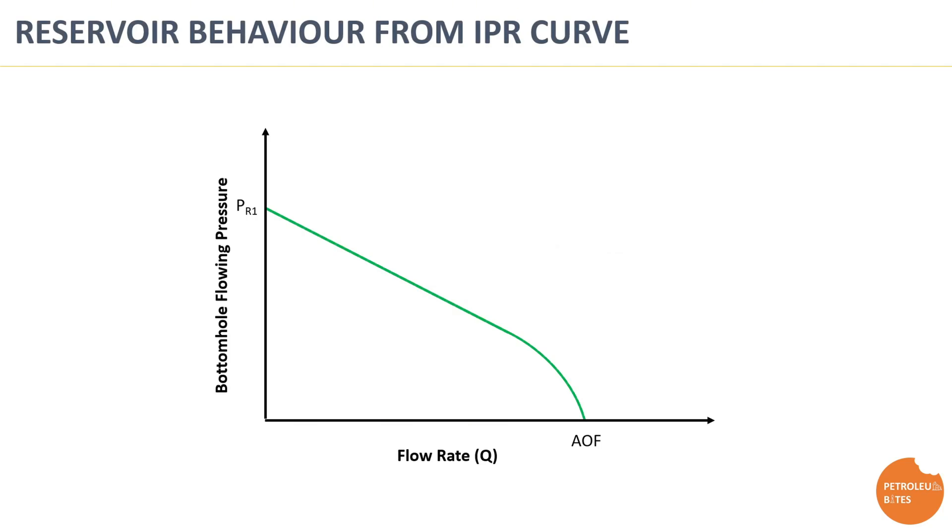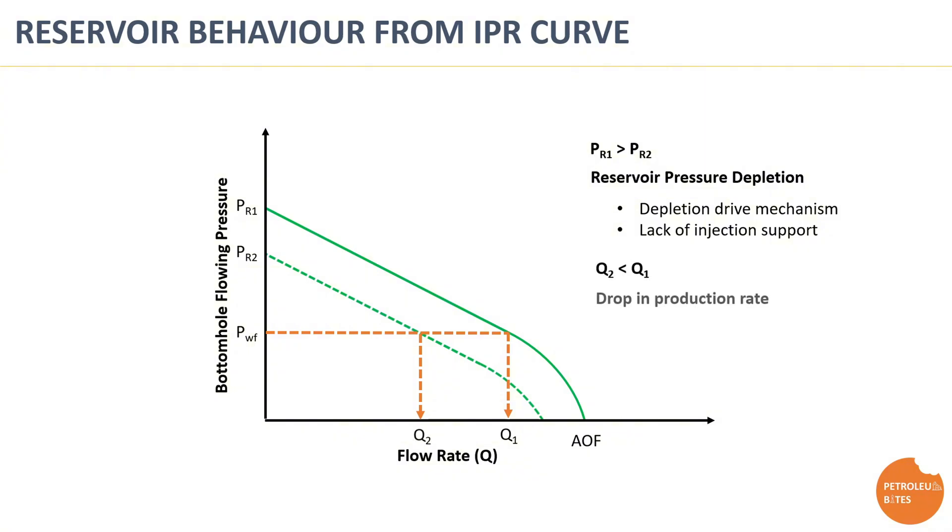IPR curve dynamically changes during the well's run life. Every change reflects the current performance of the reservoir rock. For example, flowing rate may drop as a result of reservoir pressure depletion. This might happen in depletion drive reservoir or in water injection pattern where a lack of injection support occurs.